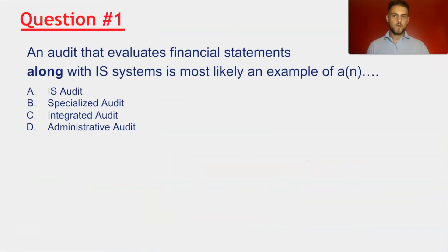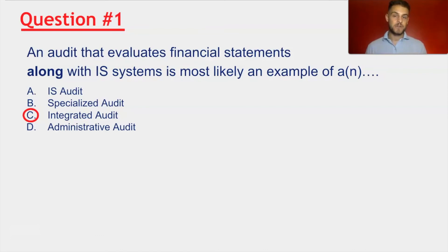Let's try some questions out. Question number one: an audit that evaluates financial statements along with IS systems is most likely an example of an integrated audit. Think back to the definition of an integrated audit — it normally comprises of a financial audit with another non-financial audit. C would be the correct answer. An IS audit is normally an IS audit alone. A specialized audit looks at a tightly defined activity within an organization, which wouldn't look at financial statements and IS systems combined. And an administrative audit will typically look at management's efficiency or effectiveness.